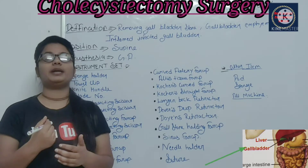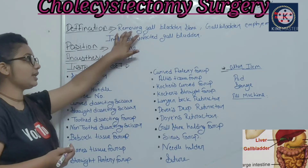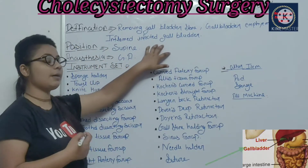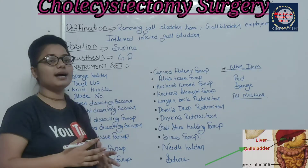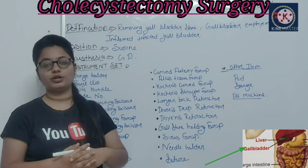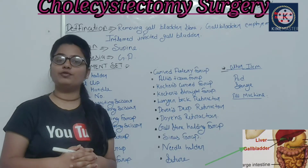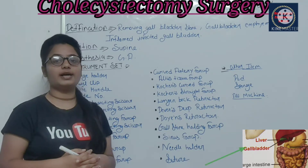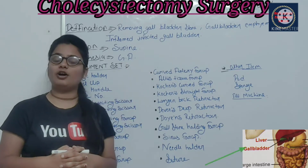Gallbladder surgery is often due to stones. You have seen that gallbladder stones occur. You may have a tumor or lymphoma in the gallbladder, or an infection or stones. In any such case, when the patient has a problem and the doctor decides to remove the gallbladder, we call it cholecystectomy or gallbladder surgery.